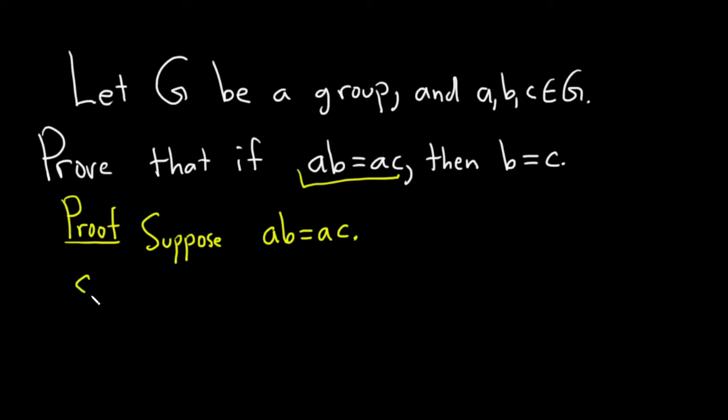Because since a is in G, and G is a group, we know the inverse of a, a inverse, is also in G. In particular, it exists. We can use its powers to help cancel the a.